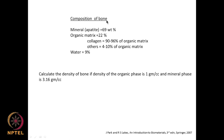If we look at bone, it is made up of many different things: the mineral which is hydroxyapatite, then the organic matrix which is predominantly collagen, with a little bit of other material. The mineral (apatite) is about 69 percent, the organic matrix is 22 percent — of which 90 to 96 percent is collagen — and it contains 9 percent water.